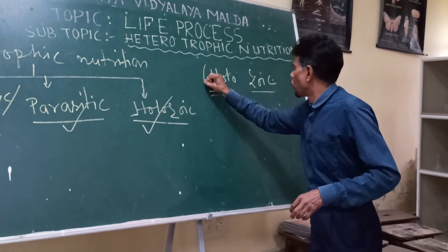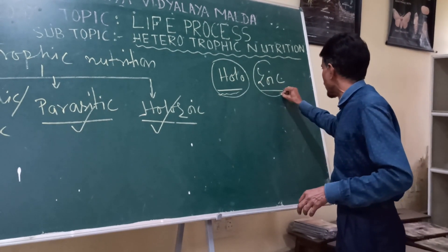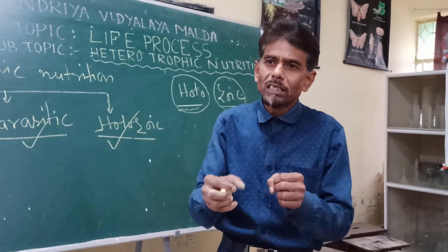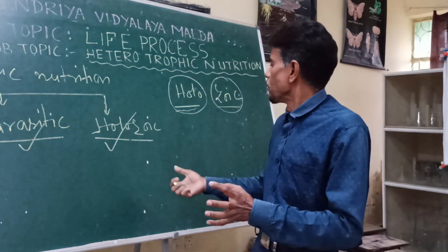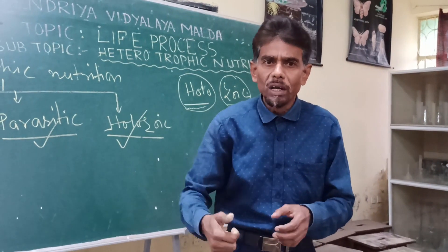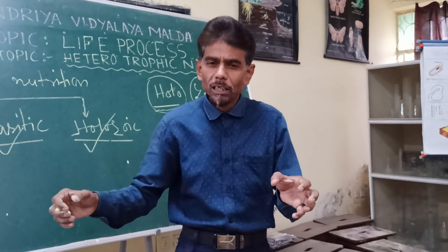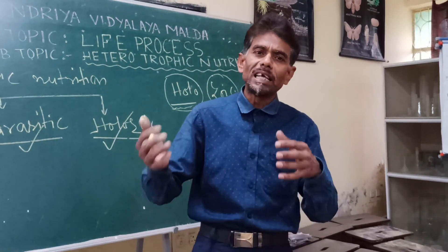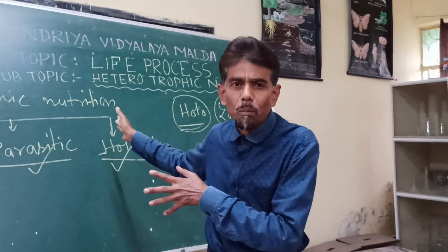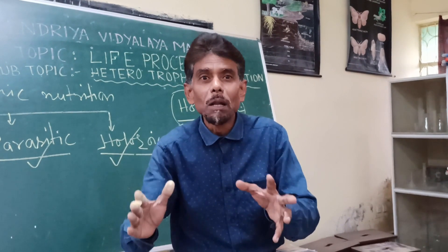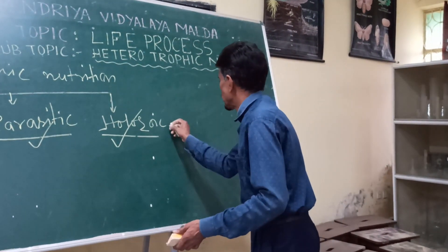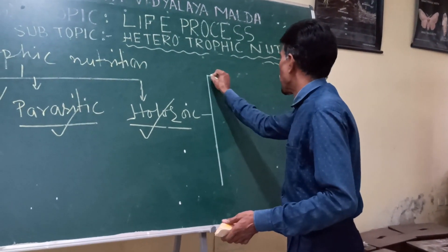The term 'holo' means solid or liquid food which the organism takes, and 'zoic' means feeding. When a particular heterotrophic organism takes in solid, semi-solid, or liquid food material — this food is ingested, then inside their body it is further broken into simple particles (digestion), then absorbed, then assimilated, and the undigested part is removed. This is called holozoic mode of nutrition, which has five different steps.